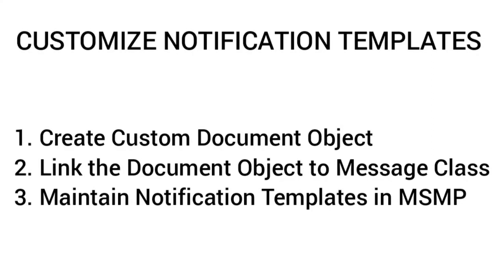In summary, creation of custom notification email messages includes three steps. First, create the custom document object using the SE61 transaction code. Second, link this custom document object with the message class using the SM30 transaction code with table GRFNV_NOTIFY_MSG — note that you can add the custom object to a standard message class or create a custom message class. Third, use the linked message classes and documents via a template ID in the MSMP workflows, where you can create your own custom template or use a standard template, added at the stage level to trigger notifications for particular recipients.